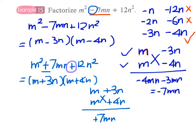We can go further still: what if we change the sign of the last term? The expression becomes m² + 7mn − 12n². Can we factorize this expression? I suggest you think for yourself — try to find two factors that make up m² + 7mn − 12n². If it's not possible, ask yourself why.